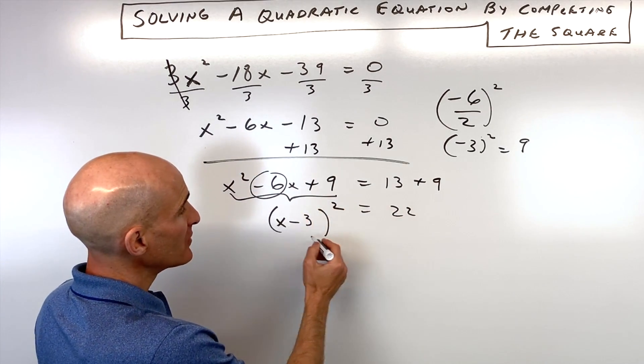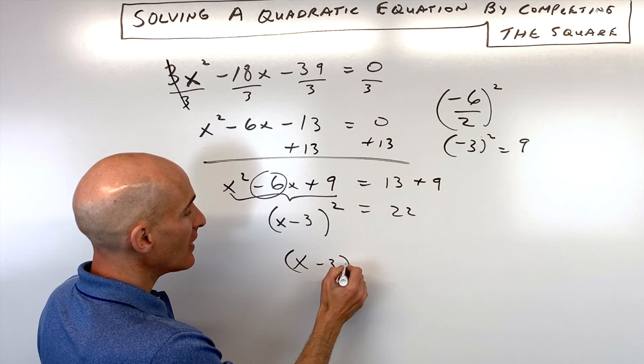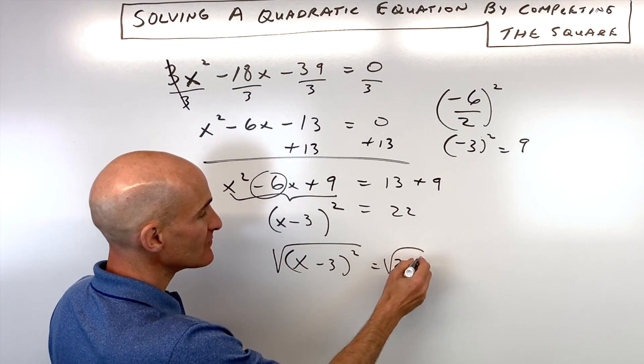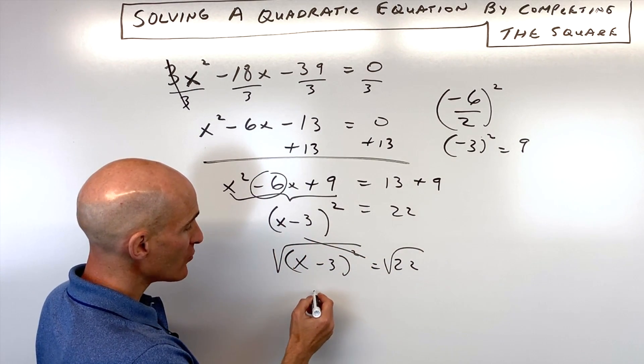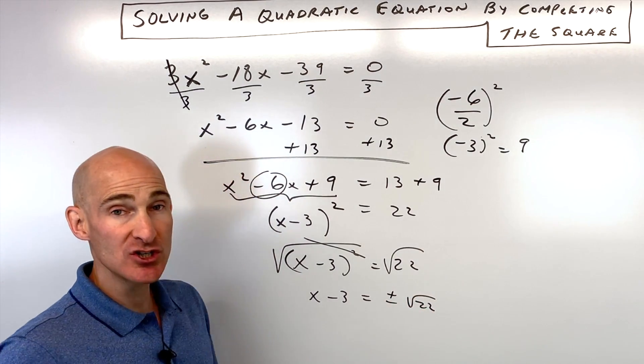So now what you can see is we've completed the square, but we want to take it one step further. We want to solve it and get x by itself. So what we're going to do is take the square root of both sides to keep the equation balanced, and to get rid of this square. The square and the square root cancel, we get x minus 3 equals plus or minus the square root of 22.